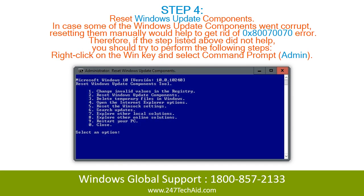Step 4: Reset Windows Update Components. In case some of the Windows Update Components went corrupt, resetting them manually would help to get rid of the 0x80070070 error. Therefore, if the steps listed above did not help, you should try to perform the following steps.